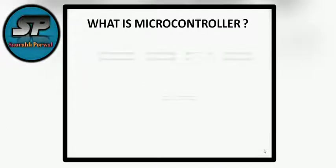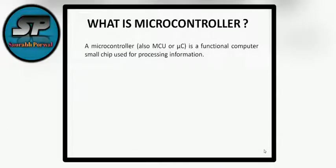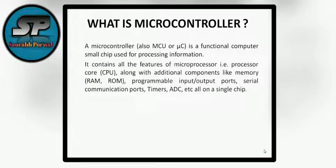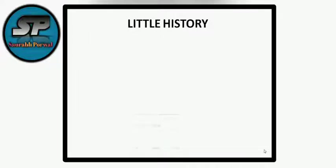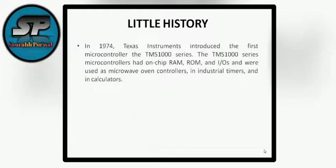What is a microcontroller? A microcontroller is a functional computer on a small chip used for processing information. Basically, it contains all the features of a microprocessor — that is, a processor core — along with all additional components like memory, programmable input-output ports, serial communication ports, timers, ADC (analog to digital converter), etc., all on a single chip. Since all are combined in a single IC, that can be called a microcontroller.